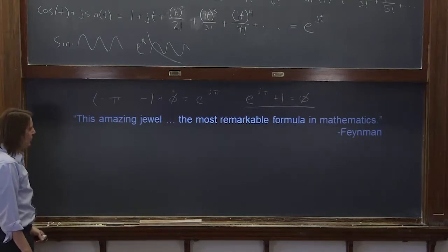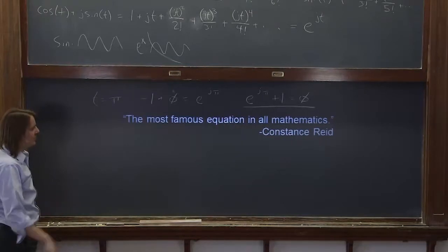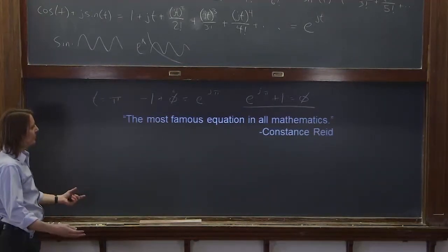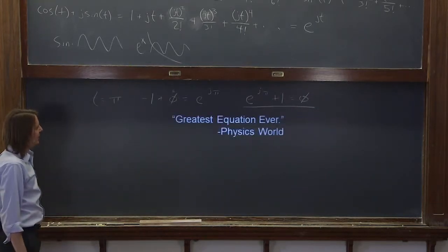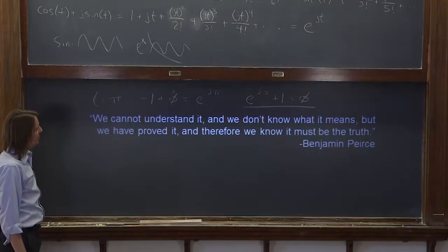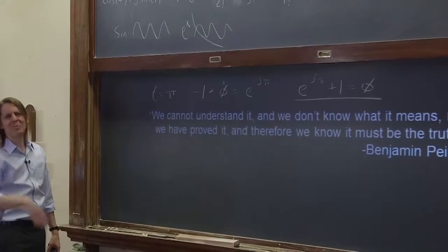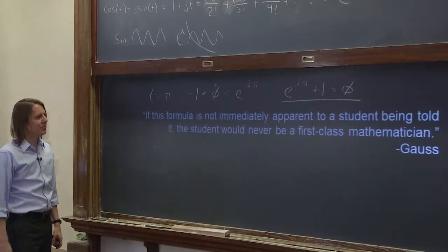Feynman said this amazing jewel, the most remarkable formula in all of mathematics. Constance Reid, who's a mathematician and wrote a lot of popular books about mathematics, says it's the most famous equation in all mathematics. If Constance Reid says it is, then it is. Physics World declared it the greatest equation ever. Benjamin Peirce - I like this guy - he says we don't understand it, we don't know what it means, but we've proved it and therefore we know it must be true. So I kind of like him. Don't get all weepy over it. It's just, it's true. Don't worry, move on.